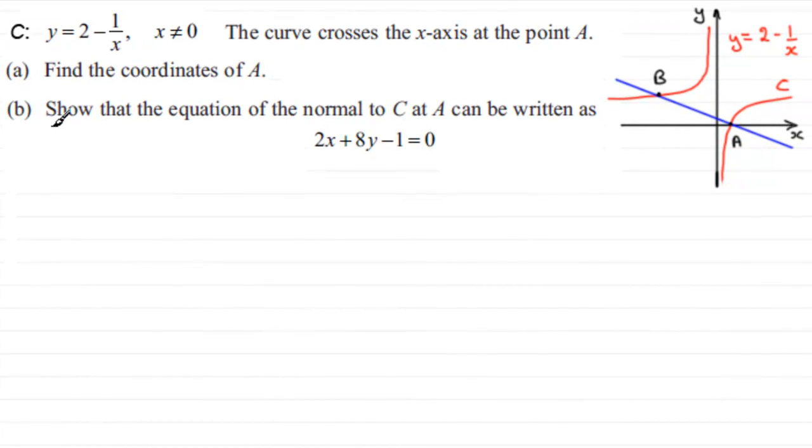In this question, we've got the curve C, which has equation y equals 2 minus 1 over x, x not equal to 0, and this curve crosses the x-axis at the point A. And we've got the sketch over here of y equals 2 minus 1 over x, the curve C in red. And you can see it crosses the x-axis at this point A.